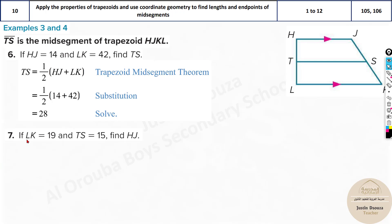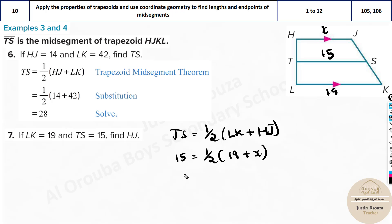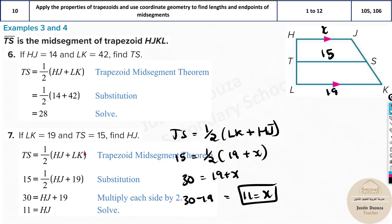Please try this by yourselves. Now we will do it: LK is given as 19, and TS is given as 15. To find HJ, use TS equals half of (LK plus HJ). So 15 equals half of (19 plus x). Multiply both sides by 2: 30 equals 19 plus x. Taking 19 to the other side: x equals 30 minus 19, which is 11.